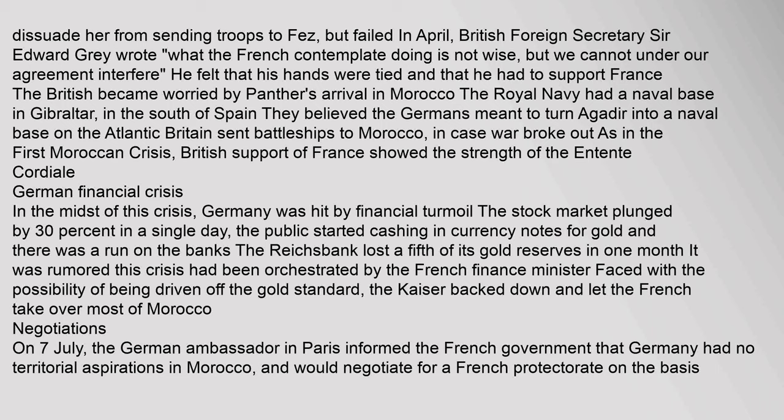Faced with the possibility of being driven off the gold standard, the Kaiser backed down and let the French take over most of Morocco. On 7 July, the German ambassador in Paris informed the French government that Germany had no territorial aspirations in Morocco, and would negotiate for a French protectorate on the basis of compensation for Germany in the French Congo region.